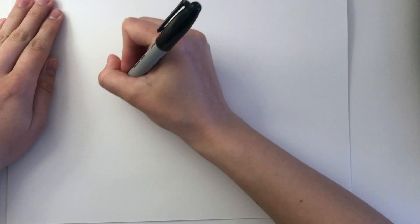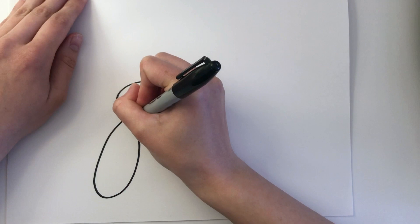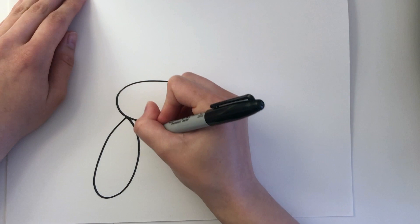Start by creating some ovals for the body and for the legs. To help your dog look more 3D, I recommend creating a curved line right next to that oval you created for the leg. You're going to repeat this for the front legs as well.